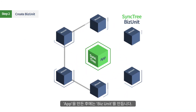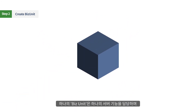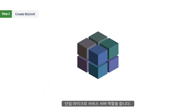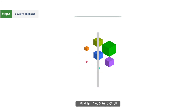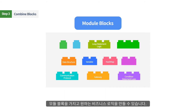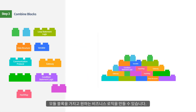After creating an app, you create biz units. One biz unit is responsible for one server function and acts as a single microservice server. Once you create biz units, you can start developing your desired business logic with module blocks.